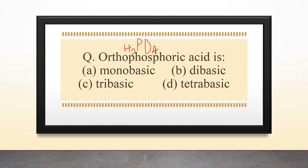In the structure of orthophosphoric acid, we observe three P-OH bonds and one P=O (double bond) bond. Since there are three P-OH bonds in H₃PO₄, the nature of orthophosphoric acid is tribasic. So the answer is tribasic.